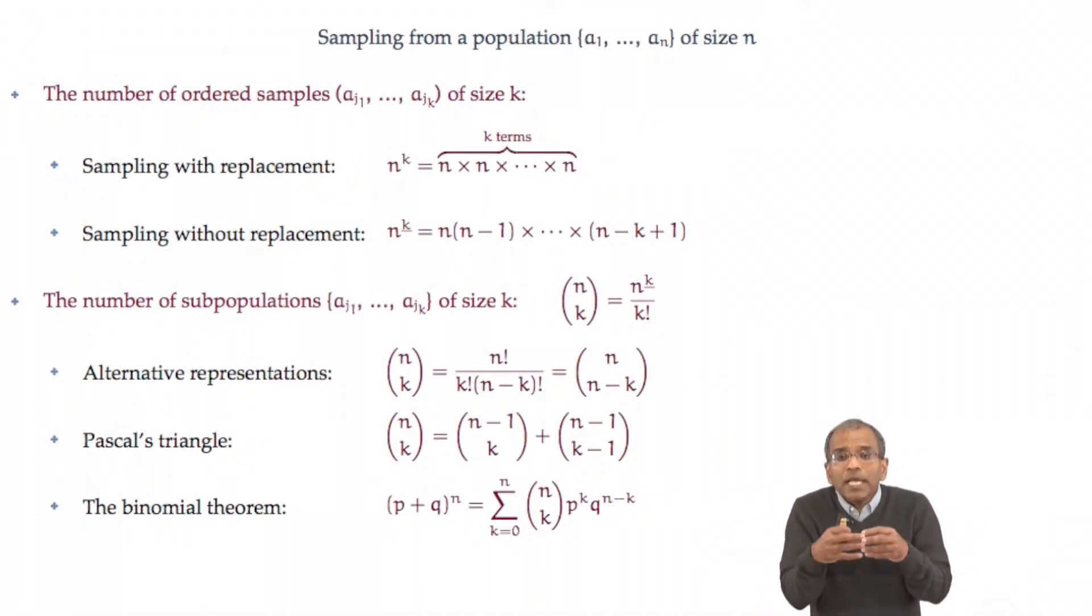If the sample is an ordered sample, where the order matters, then if the sampling is with replacement, there are n to the k possibilities. If the sampling is without replacement, then there are n to the k falling possibilities.